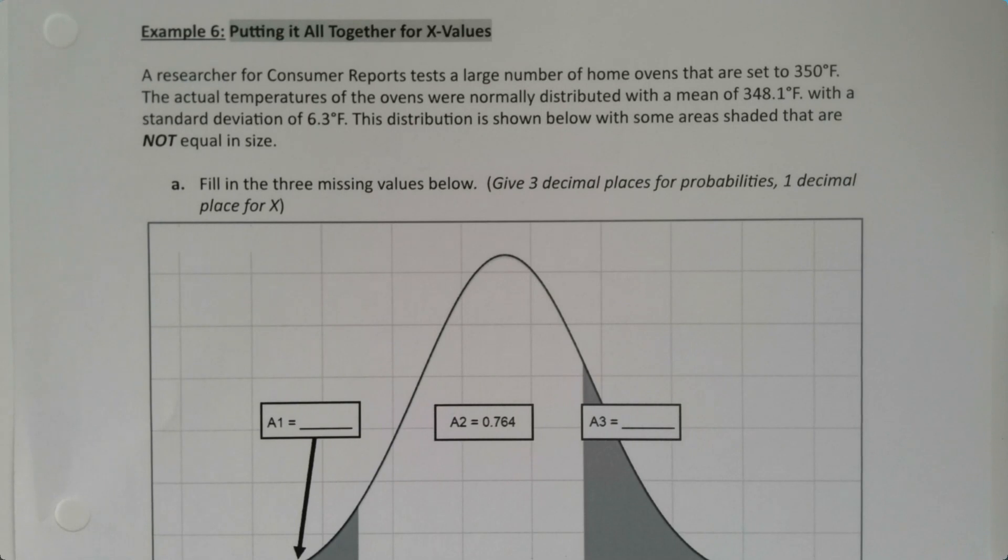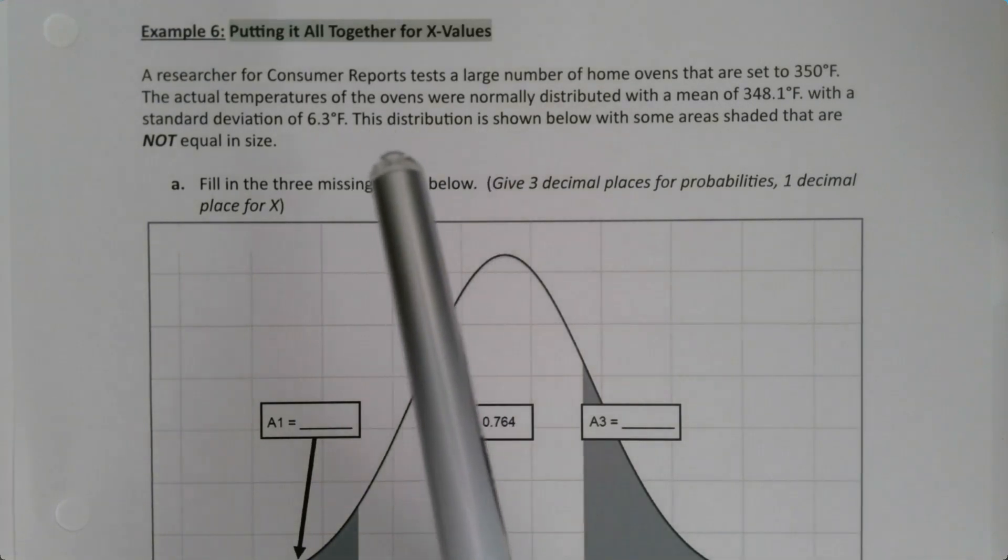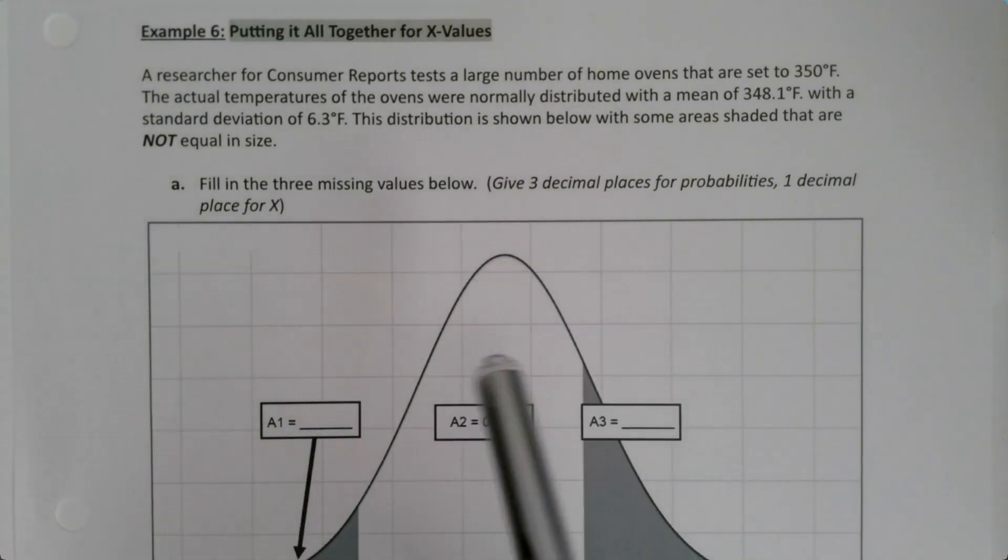We have a researcher for Consumer Reports who tests a large number of home ovens that are set to 350 degrees Fahrenheit. The actual temperatures of the ovens were normally distributed with a mean of 348.1 degrees Fahrenheit and a standard deviation of 6.3 degrees Fahrenheit.